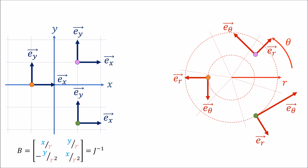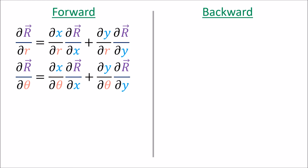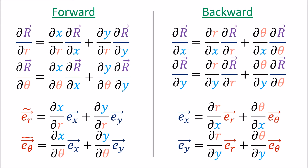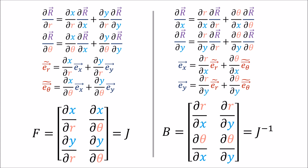Just like before, we can substitute the coordinates into the inverse Jacobian at any point and get the backward transform matrix for that point. The key to the forward transform — whether written in partial derivative notation or basis vector notation — is just the multivariable chain rule, and the same thing goes for the backward transform. We can store the forward coefficients in a matrix called F or J for Jacobian, and we can store the backward coefficients in a matrix called B or J⁻¹ for the inverse Jacobian.